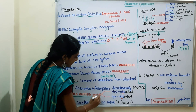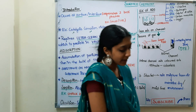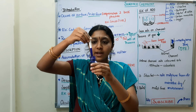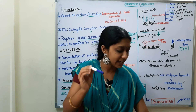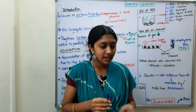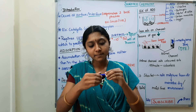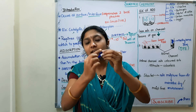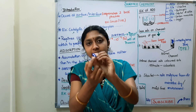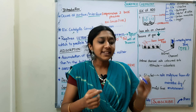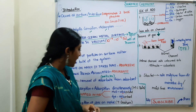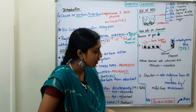The best example of sorption is chalk dipped in ink. If you dip chalk in blue ink — blue ink is a blue color dye dissolved in water — first the dye particles are adsorbed onto the chalk surface, and the water is absorbed into the chalk. So the dye is adsorbed and the water is absorbed simultaneously. This is an example of sorption.